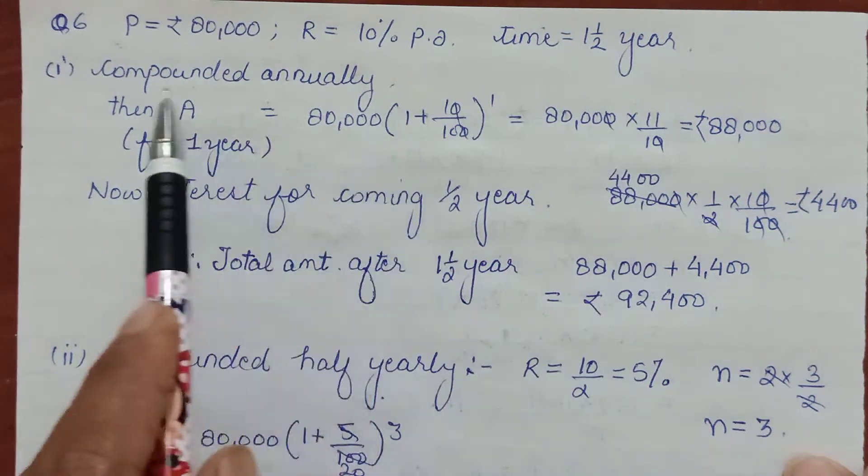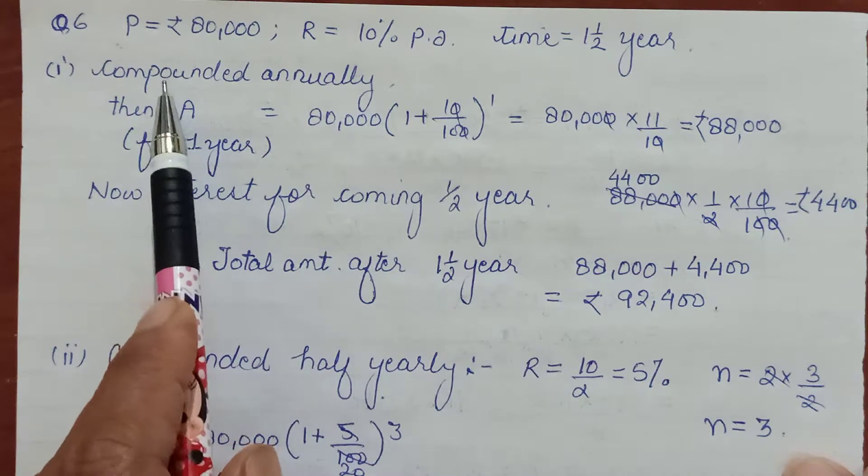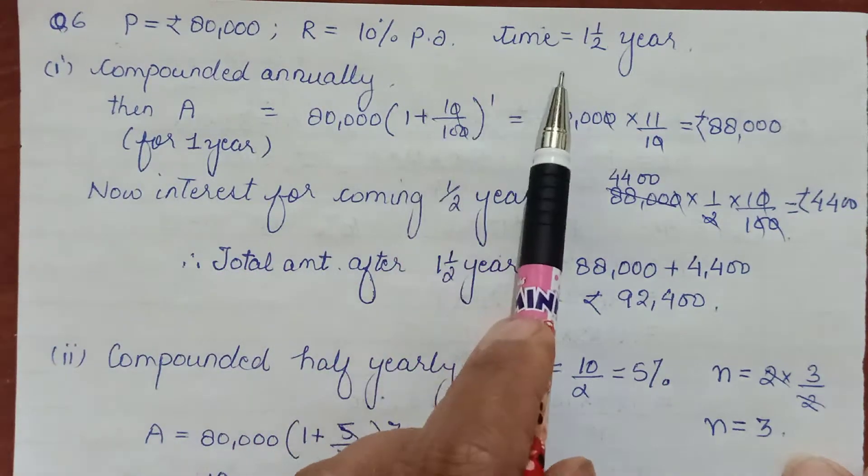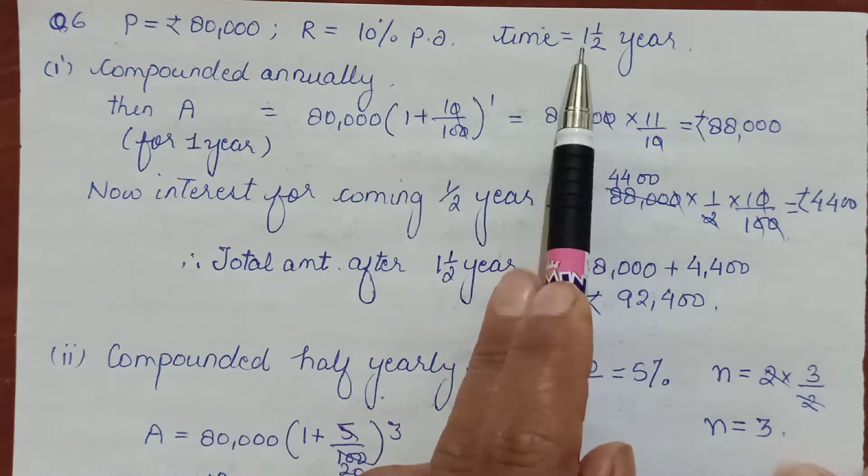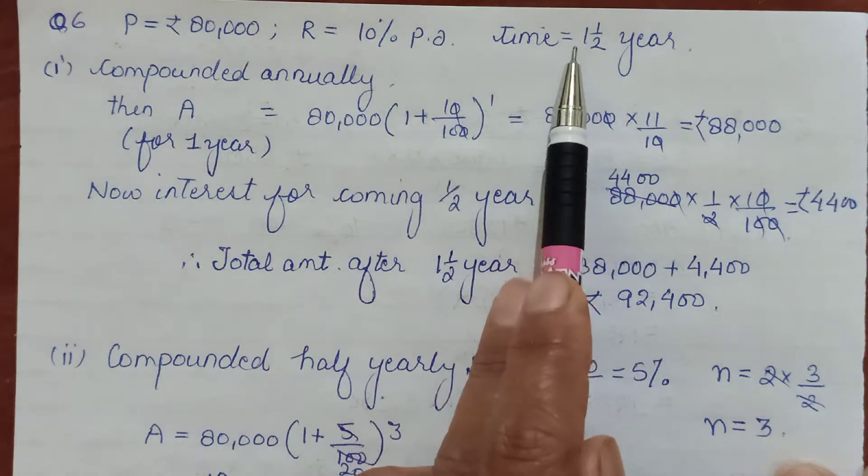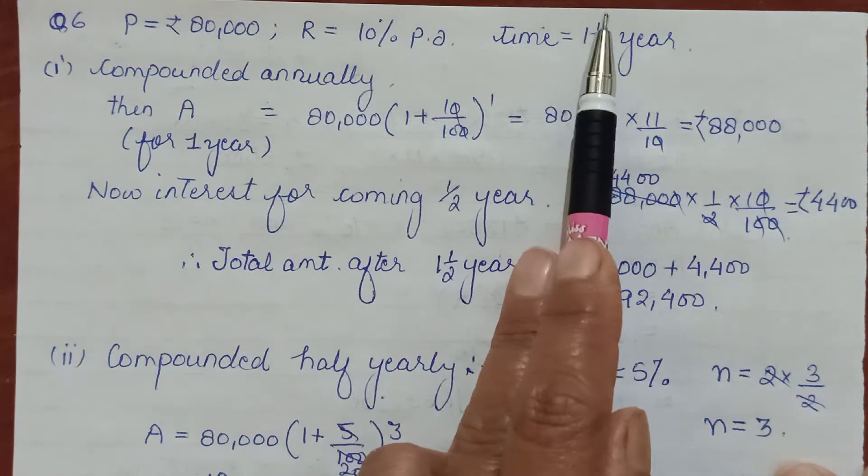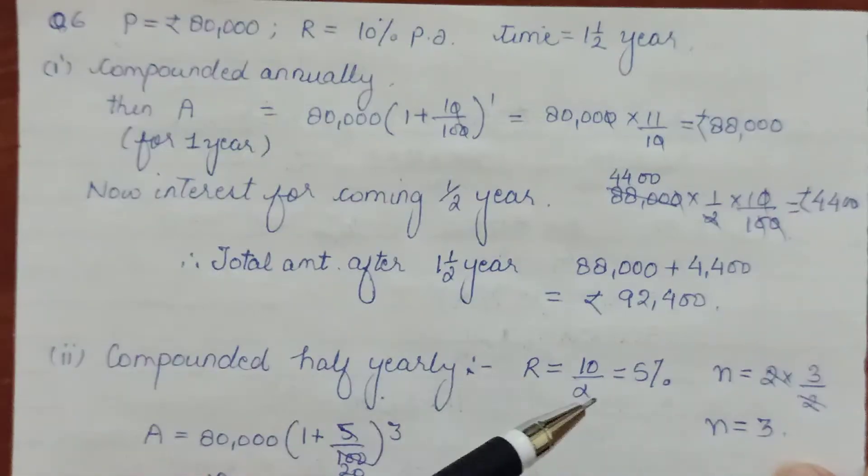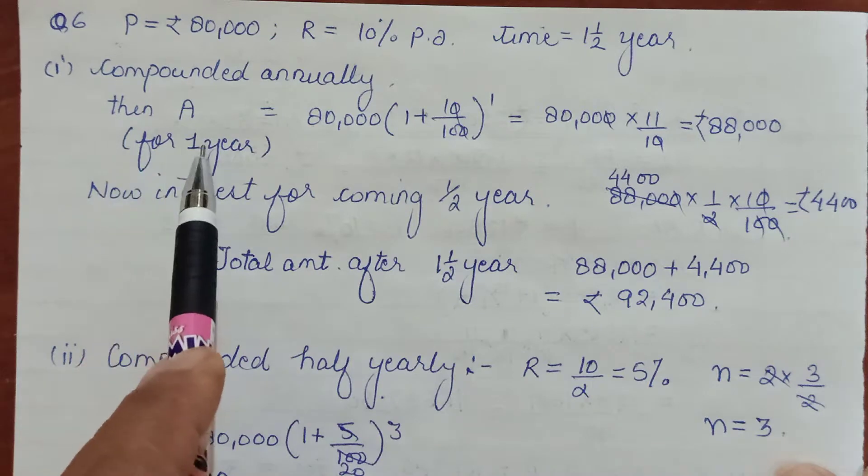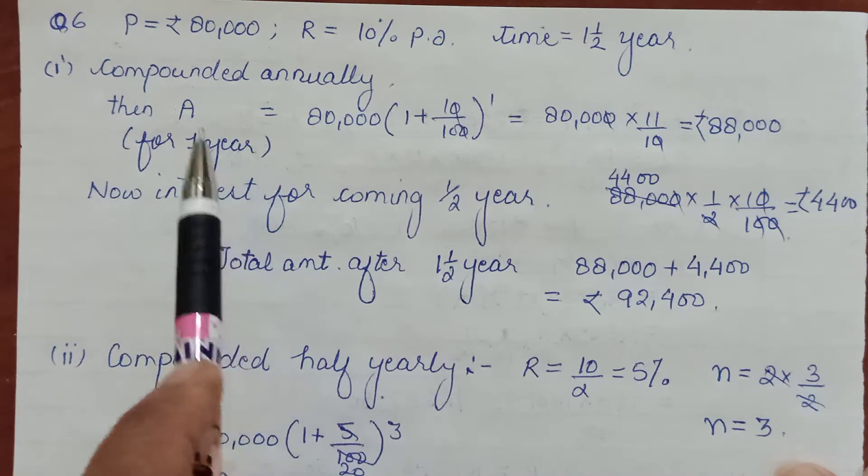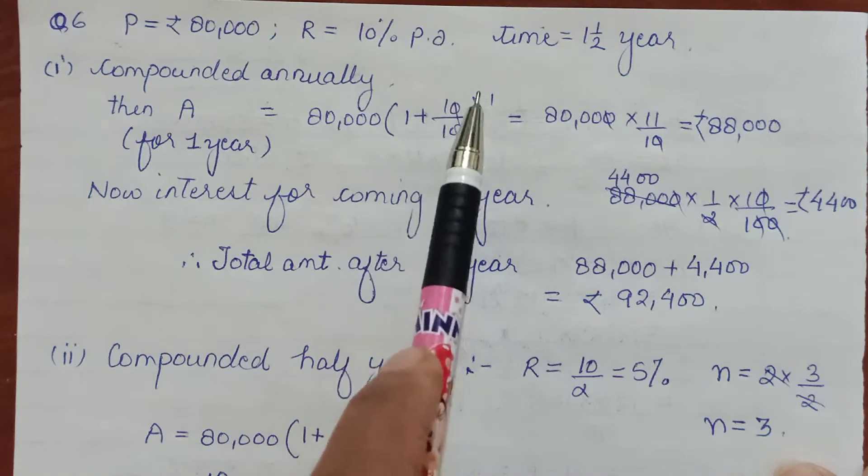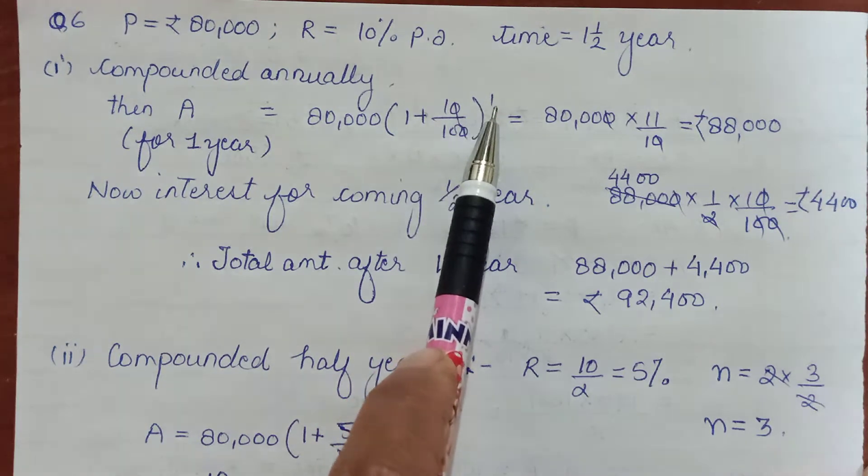First case: if it was being compounded annually, the rate is enough because it is per annum. Time is one and a half years, so we can remove the fractional part using simple interest on that amount obtained till there. For the first year, I'm taking out the amount as A = P(1 + R/100)^n, which is ₹88,000.